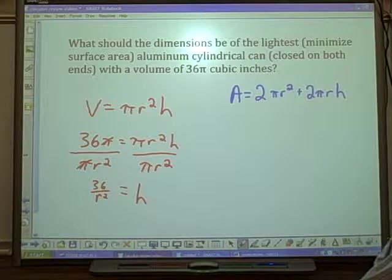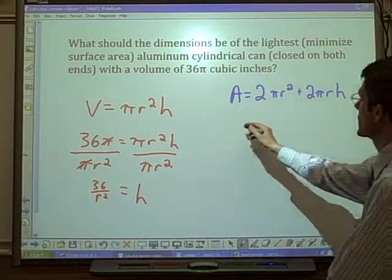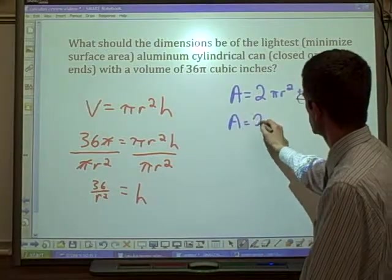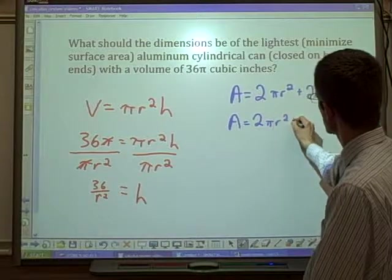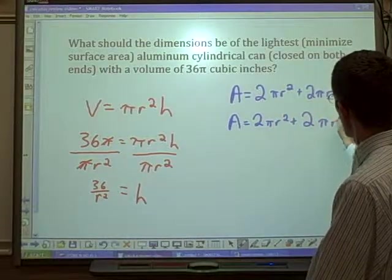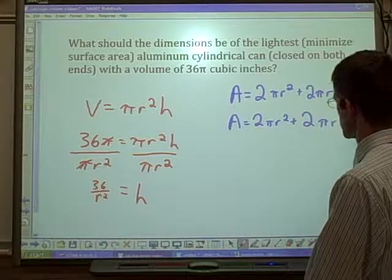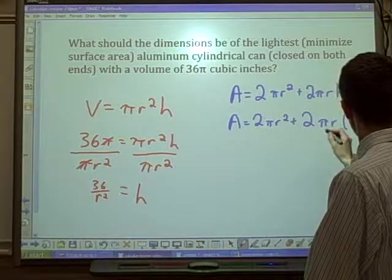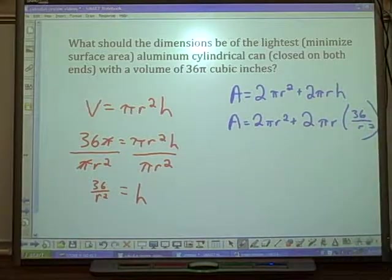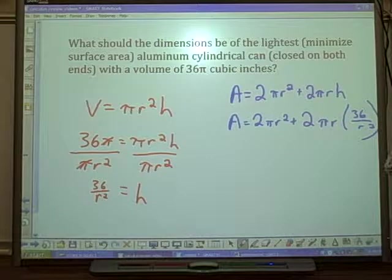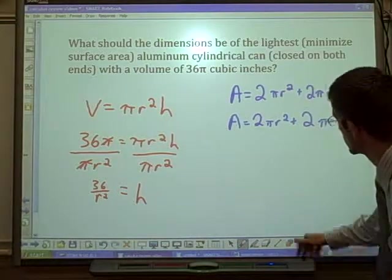We know what the height is. Since we know what the height is, we will plug that height in. So the area is 2πr² plus 2πrh. Now, once we have it simplified, we'll take the derivative.